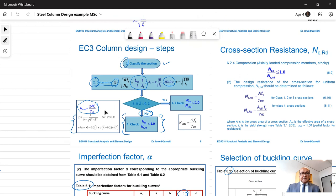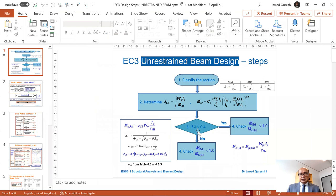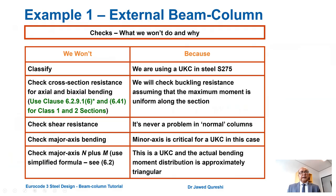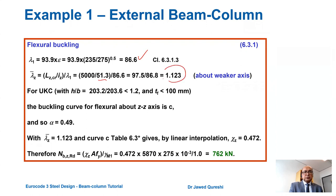First we find lambda dash 1, then lambda dash Z. Lambda dash 1 comes out to be 86.1. Lambda dash Z is LCR over IZ; using values from the section table it comes out to be 1.12 about the weaker axis, which makes sense because for practical columns the range of lambda dash Z is from 0.2 to 1.2. For a UKC section the buckling curve is C and alpha comes out to be 0.49 from tables 6.3 and 6.1.